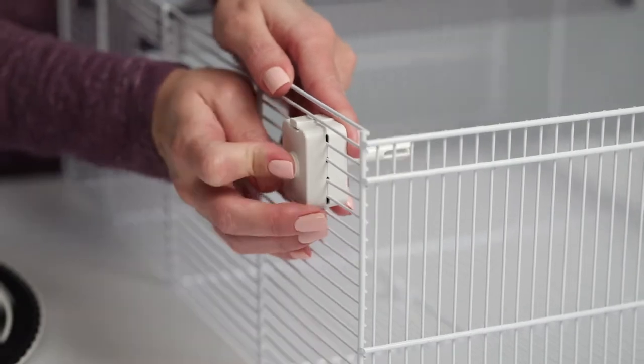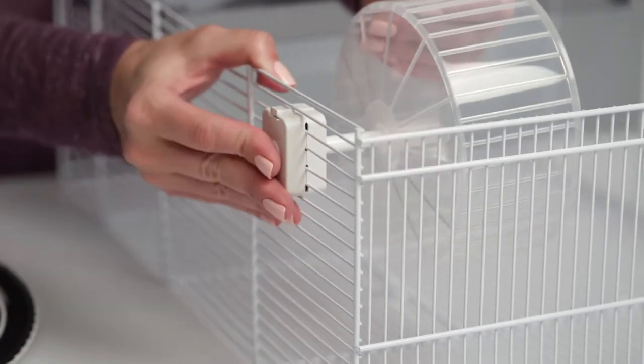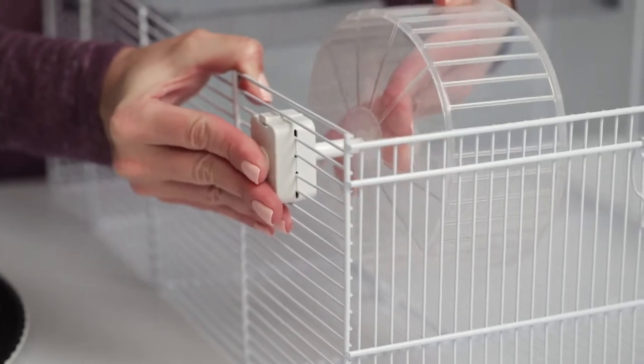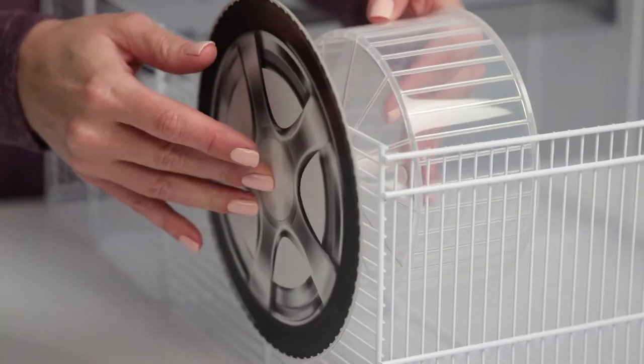Insert the peg then firmly push the exercise wheel into place on the inside and place the decorated circular mount on the outside.